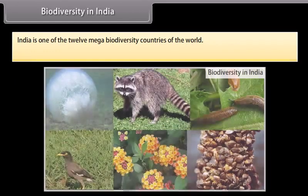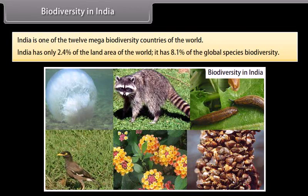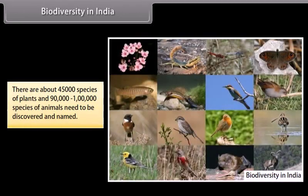Biodiversity in India. India is one of the 12 mega biodiversity countries of the world. India has only 2.4% of the land area of the world, yet it has 8.1% of the global species biodiversity. There are about 45,000 species of plants and 90,000 to 1 lakh species of animals yet to be discovered and named.